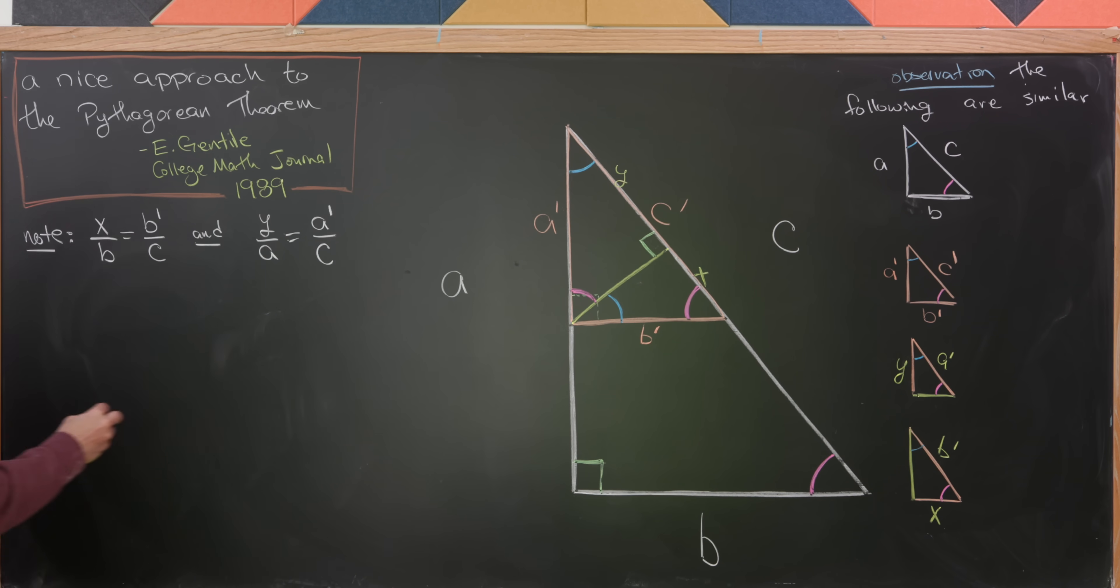So now let's cross multiply and see what we get. Observe that we're going to have b times b prime is equal to cx. And then we're also going to have a times a prime is equal to c times y, by cross multiplying those two.